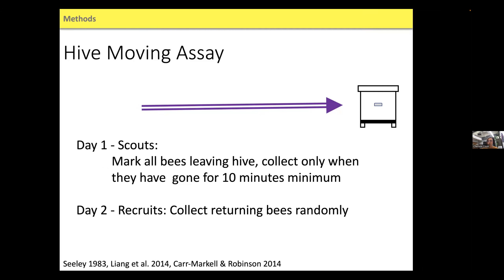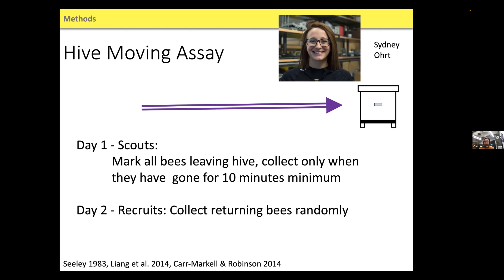The colony is closed up so any bee that left isn't getting back in — they're not getting any waggle dance information either. We collected scouts, and after collecting scouts who had been gone at least 10 minutes in this completely novel environment, on day two I opened the colony, allowed bees to go in and out for 24 hours, then the next morning collected bees returning as recruited bees. This was based on Tom Seeley's work showing about 73% of foragers tend to be recruits. We did this in Arizona — it was 115 degrees Fahrenheit, about 45 Celsius, most days during the summer.